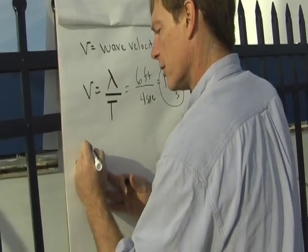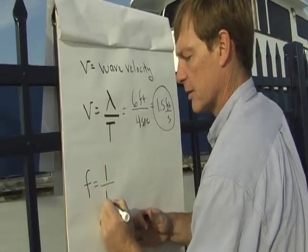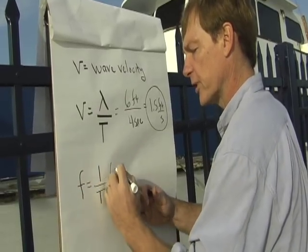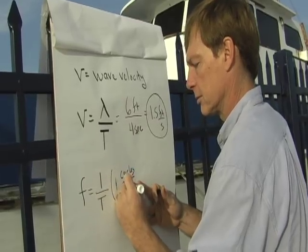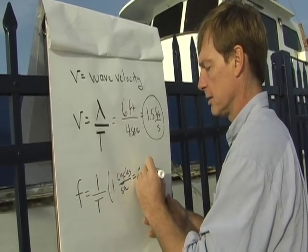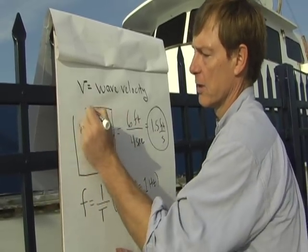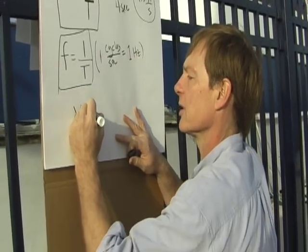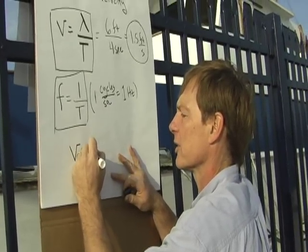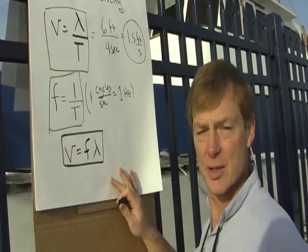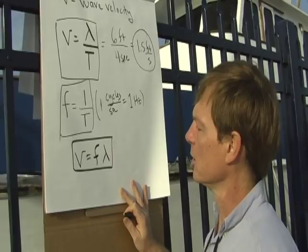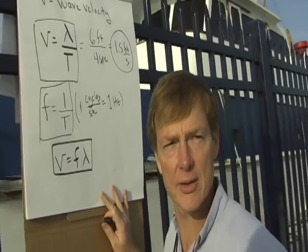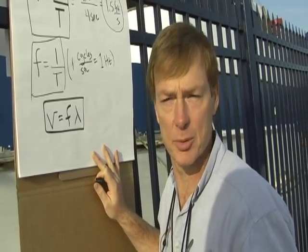Another way to look at this: frequency is the inverse of the period. If period is seconds per cycle, flipping that gives cycles per second — the units of frequency. A cycle per second is a hertz. So we can also write the wave speed equation using frequency as: velocity equals frequency times wavelength. Just knowing the wavelength and the period, we can figure out the velocity of the traveling wave. This is purely for a simple harmonic wave. Complex waves are just lots of different simple harmonic waves added together to produce a new type of wave.